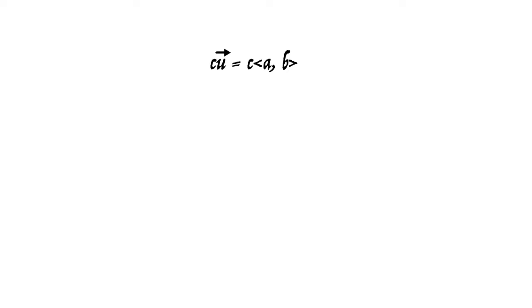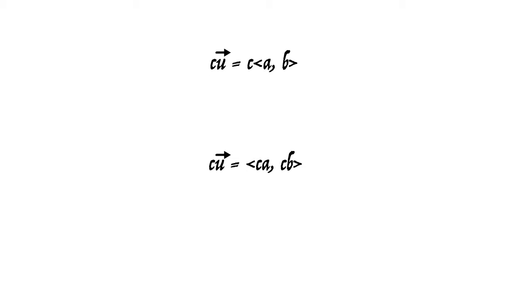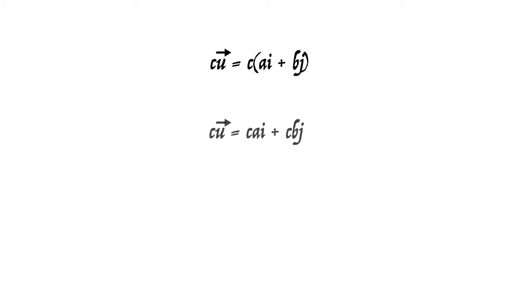When multiplying a scalar and a vector in the angled bracket form, we just multiply each of the coordinates by the scalar. When multiplying a scalar and a vector in the ij form, we multiply each component by the scalar.